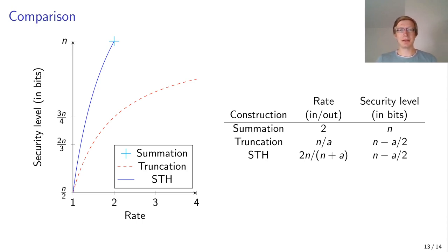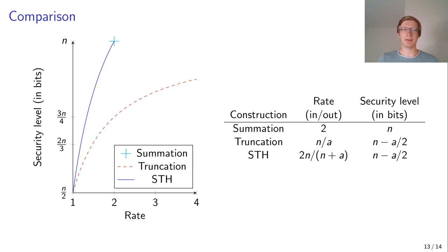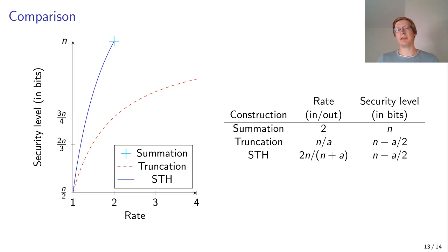And if we look at the summation-truncation hybrid, we see that it has the same security as the truncation construction, but because we have some extra output bits for free without compromising security, it's always to the left of truncation — so it is way more efficient. We also see that it starts at the normal PRP-PRF conversion point and draws a nice line up to the summation, because in the other extreme case it is equal to the summation, so it is at the same place in the graph.